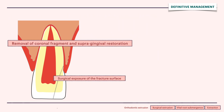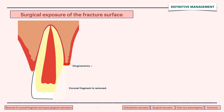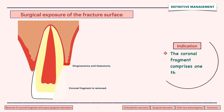In surgical exposure of fracture surface, the sub-gingival fracture is converted to a supra-gingival fracture with gingivectomy and osteotomy. It is indicated where the coronal fragment comprises one third or less of the clinical root.